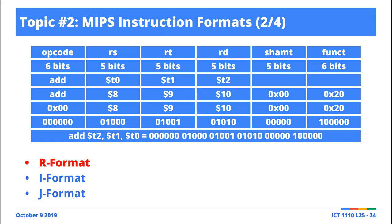The way the system looks at the instruction is different from the way we look at it. In assembly, the instruction goes: source register, target register, then source register, then destination register. But in binary, when converting, the only things that are swapped here are T0 and T1. The target is T2 and the destination is still T2 — it doesn't change — but these two are swapped.